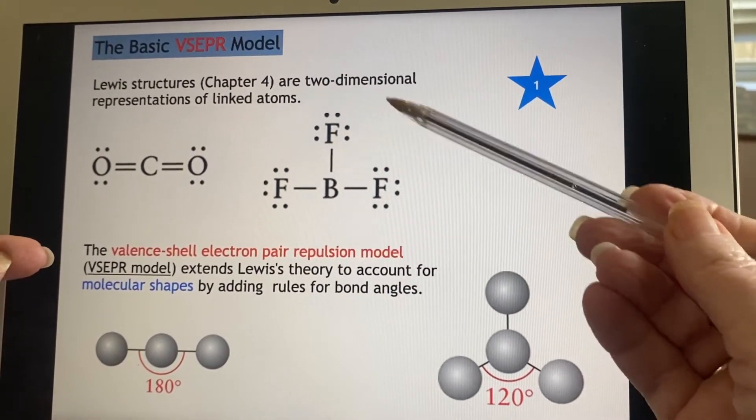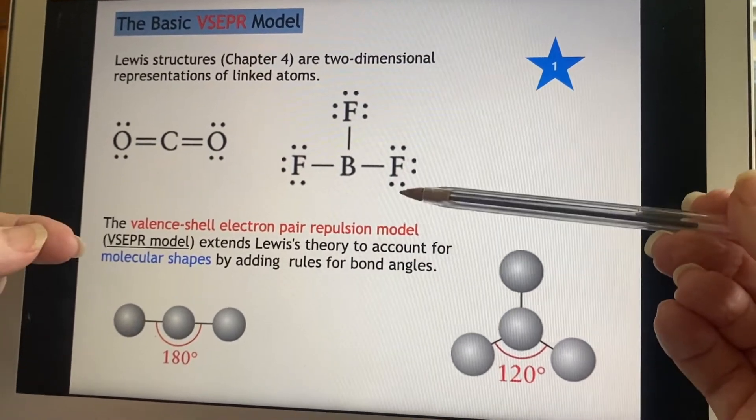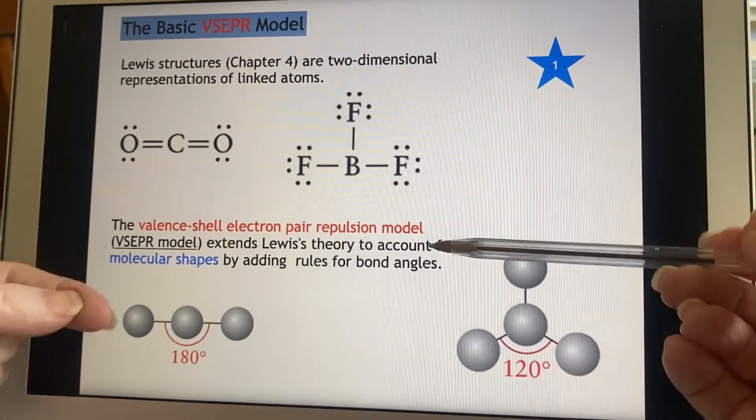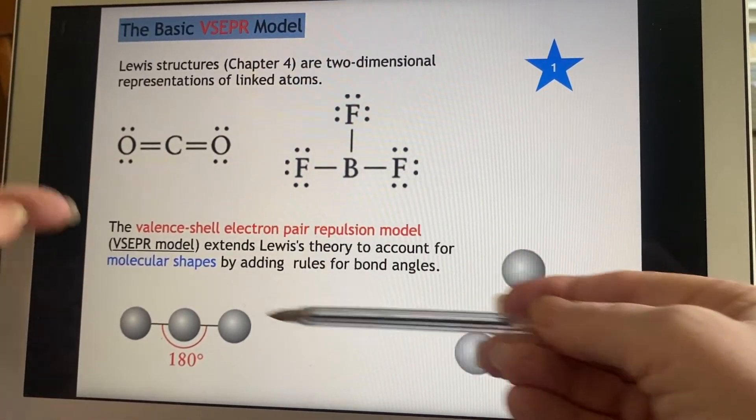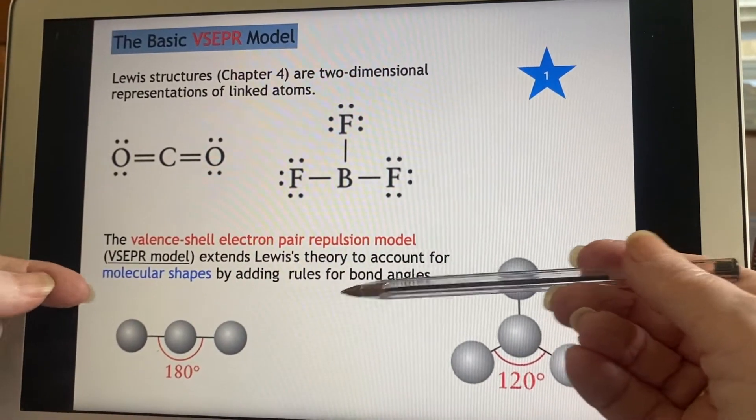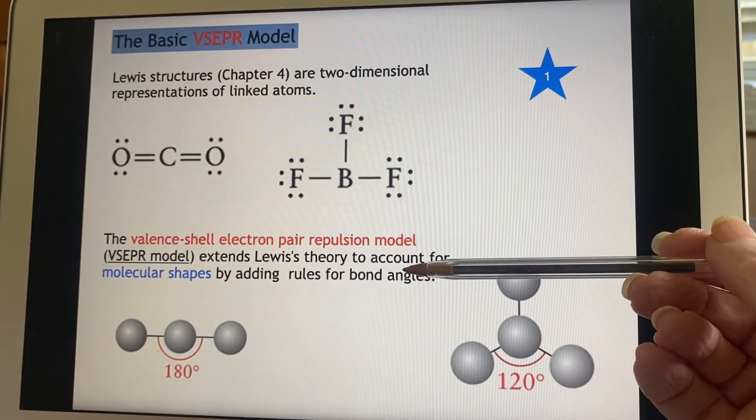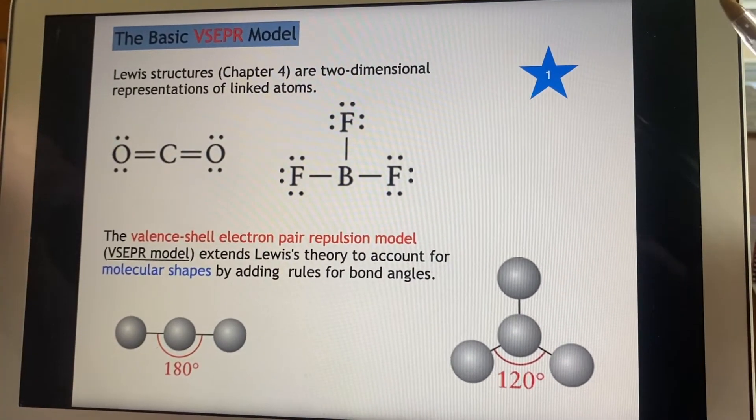And repulsion. Oh, the electrons are all negatively charged, and they do not want to be next to each other. They push away from each other. So when you put that into this, you realize it's going to form the molecular shapes by adding these rules for the bond angles based on the electron pairs repelling each other.